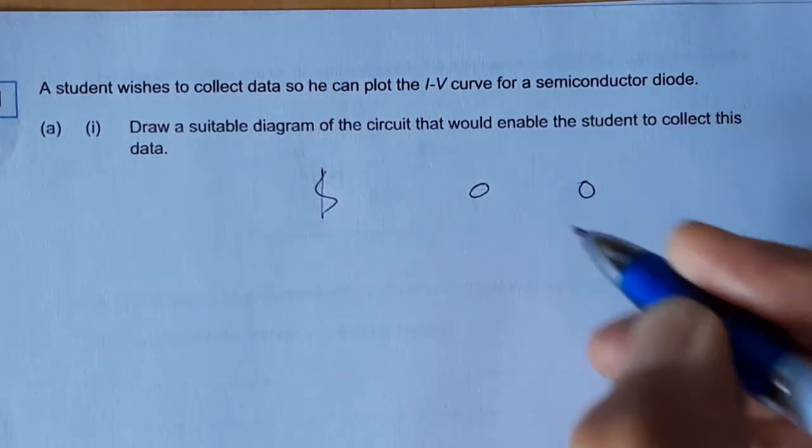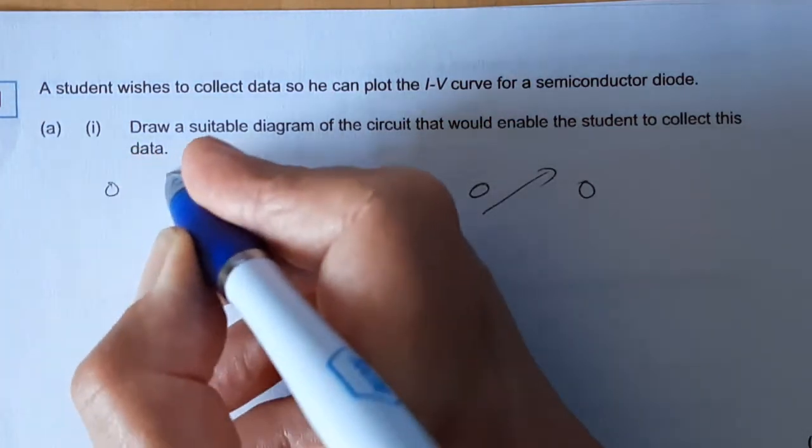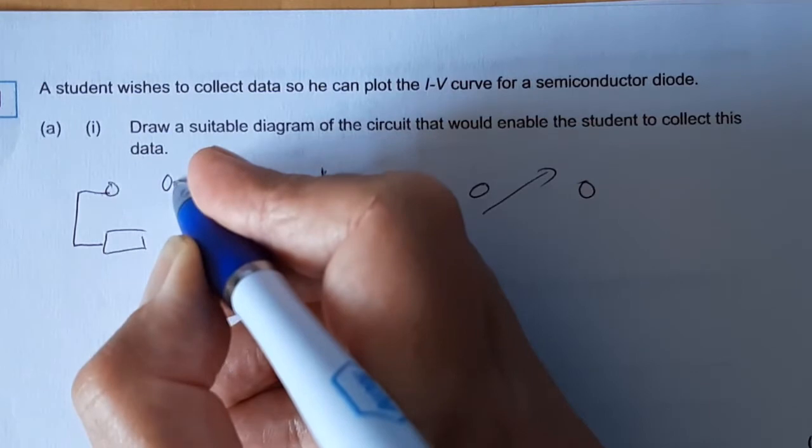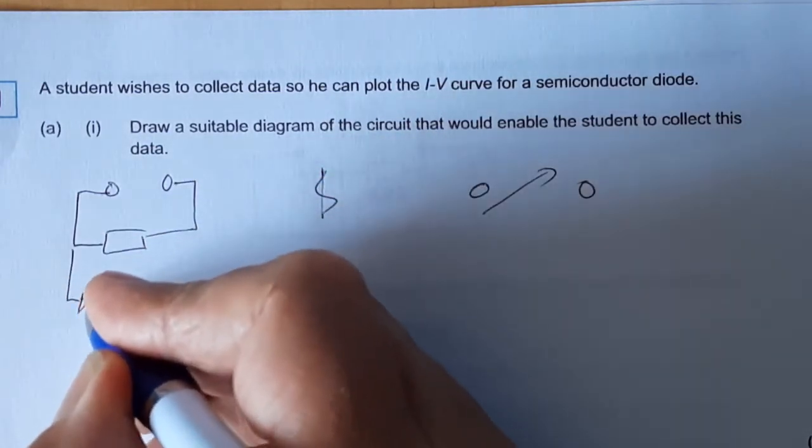We talked about this - the variable power supply is a great starting point here. You'll see what they've drawn, and we'll do this in more detail later, is a thing called a potential divider.